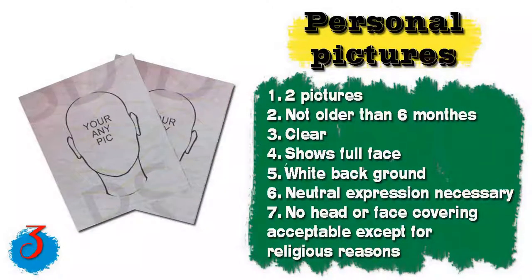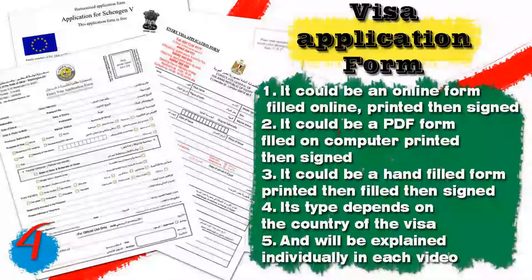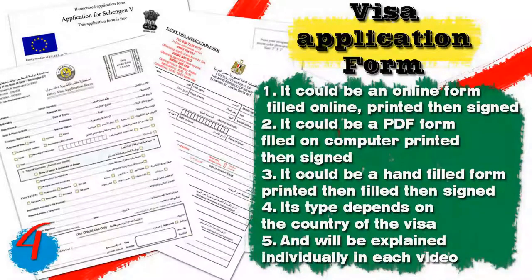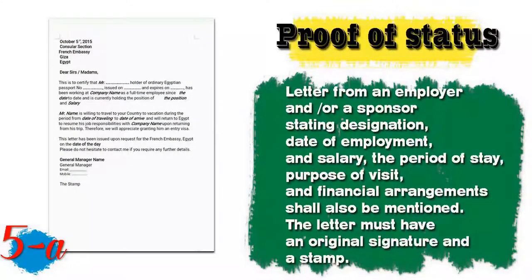Number three: you will need personal pictures. You need two pictures, not older than six months, clearly showing the full face with a white background, with neutral expressions. No head or face covering accepted except for religious reasons. Number four: you will need a visa application form — it could be an online form filled online and printed then signed, a PDF form filled on a computer and printed then signed, or a hand-filled form. The type depends on the country and will be explained individually.